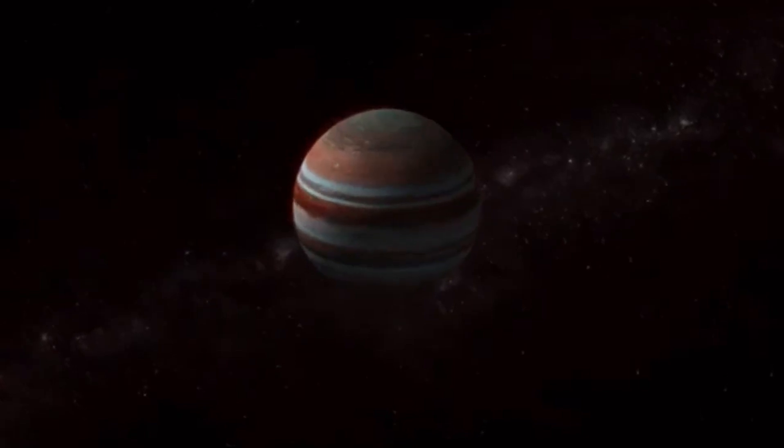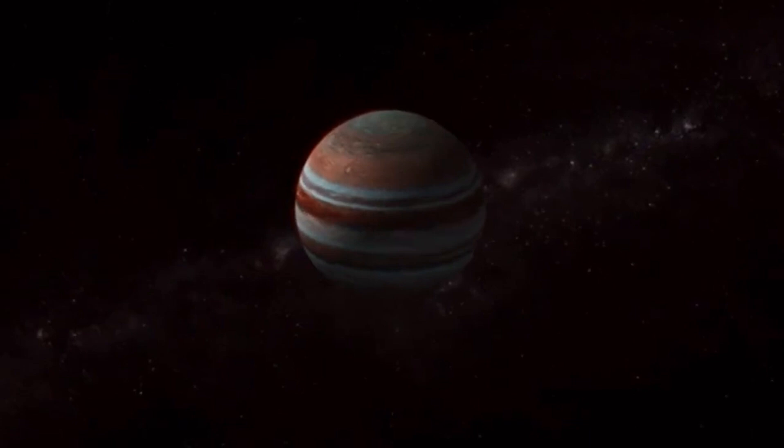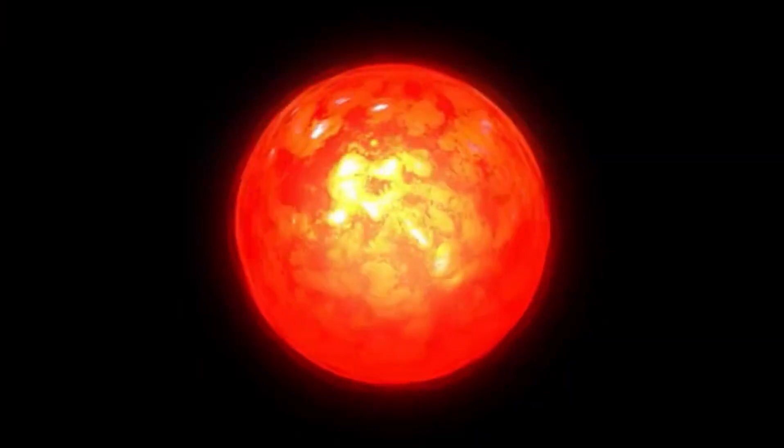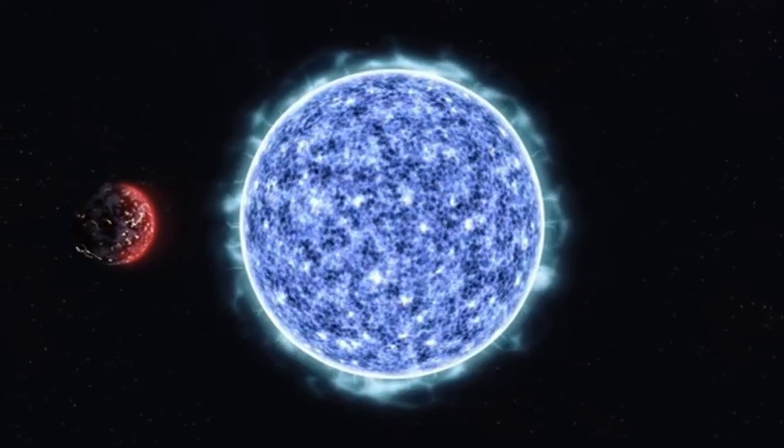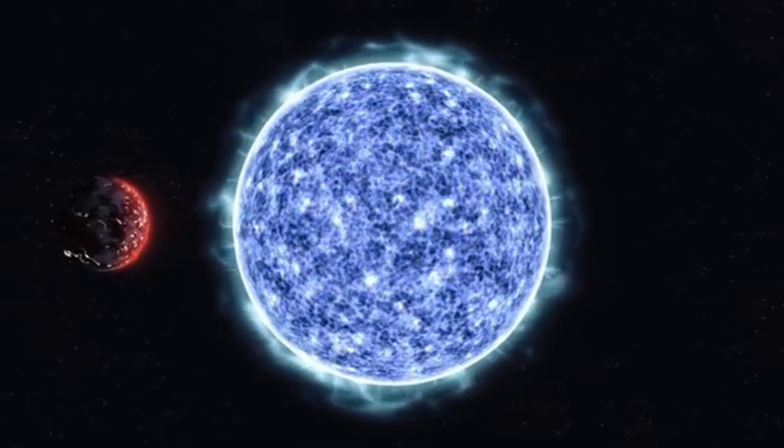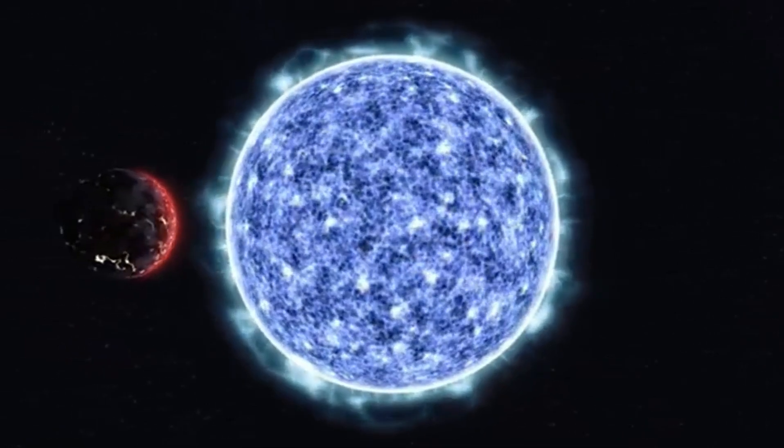K2-18b orbits within the habitable zone of its host star, a red dwarf known as K2-18. This is a region around a star where conditions might be just right for liquid water to exist, one of the key ingredients for life as we know it. Unlike the Sun, which is much larger and hotter, K2-18 is a much cooler star. This fact has a huge impact on the potential habitability of K2-18b.